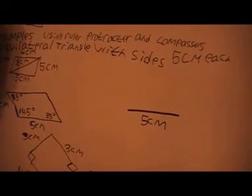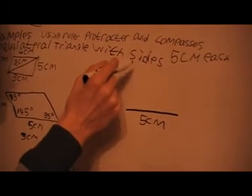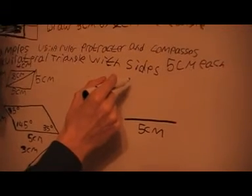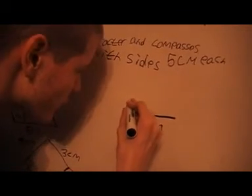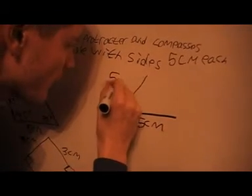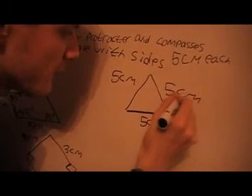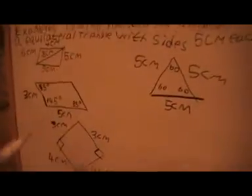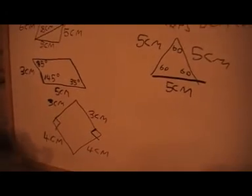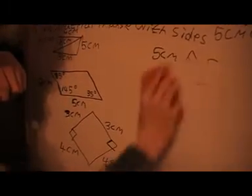And then you'd put a dot up there as well where the 5cm is, and then you can draw that in. And you should end up with something like this, and all these should be 60. So that's how you do it using your compasses and your protractors. That's how you would draw it.